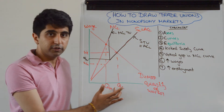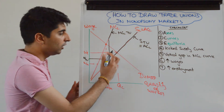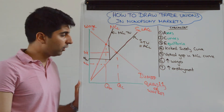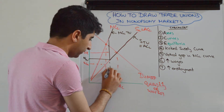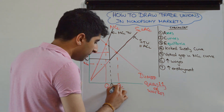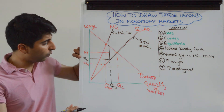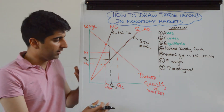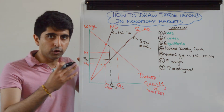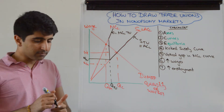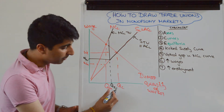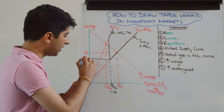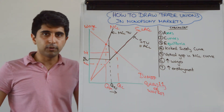We now need the quantity of workers with the trade union. To get that, go to where MRP equals the new marginal cost of labour — that gives us QTU. So you now have WTU and QTU clearly labelled, making it obvious to the examiner what you're analysing. You might also draw a small arrow showing the increase in quantity and another showing the increase in wage.